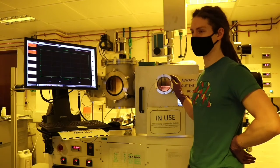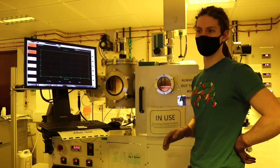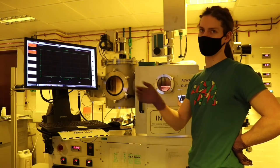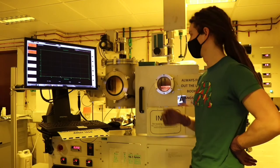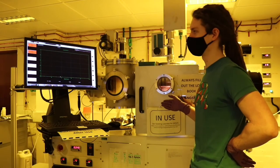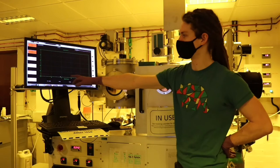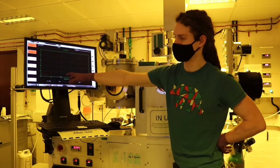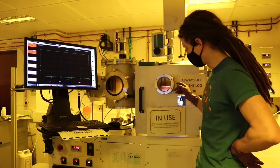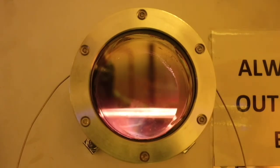This is the thermal evaporation system. This is where we deposit the material into the patterns that we create with electron beam lithography. We're currently depositing chromium onto a substrate. Over here you can see the deposition rate that we're getting from the chromium, and in here you can see the glow from the chromium being deposited.